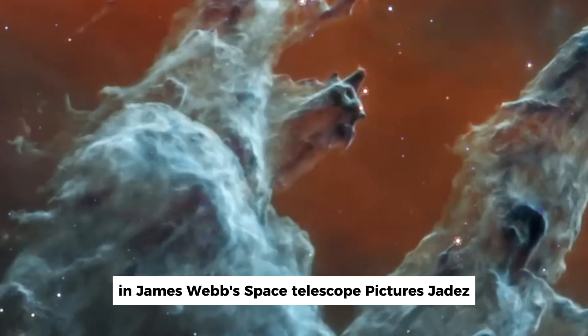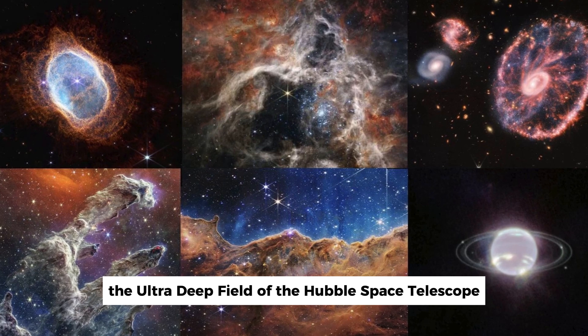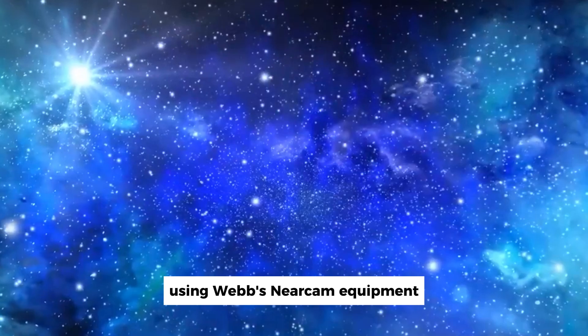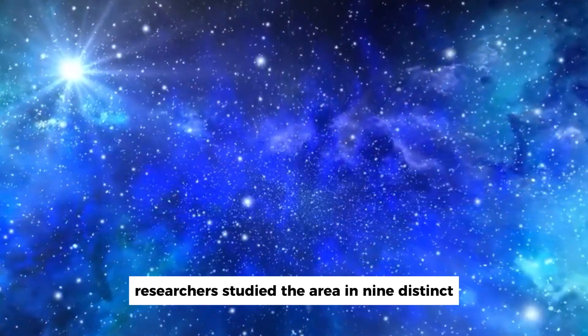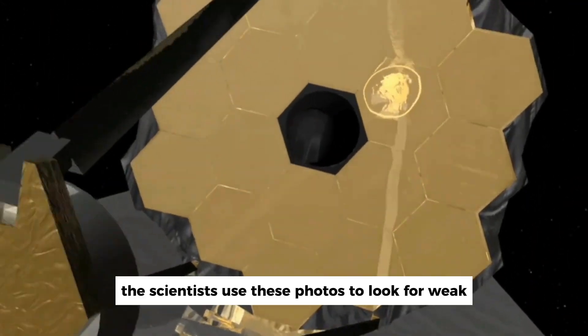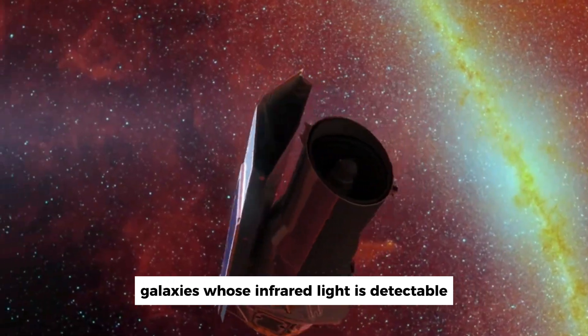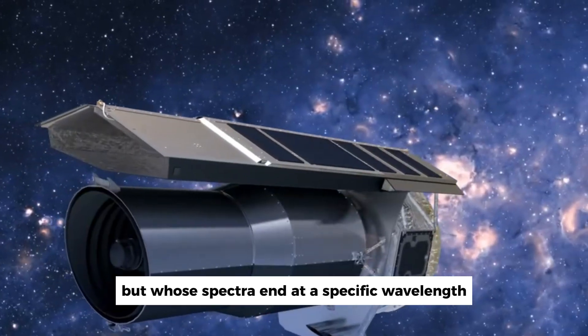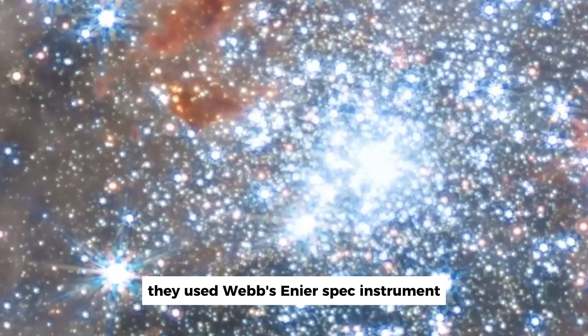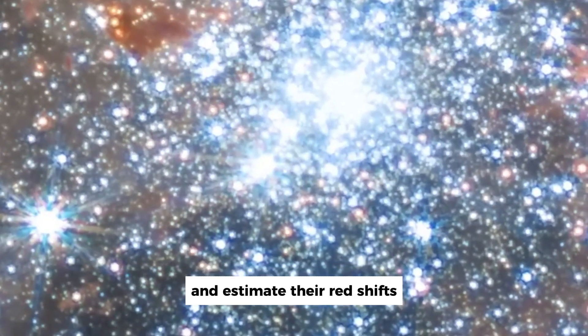In James Webb Space Telescope pictures, JADES, the ultra-deep field of the Hubble Space Telescope, is located here and to the north and east. Using Webb's NIRCAM equipment, researchers studied the area in nine distinct infrared wavelength bands. The scientists used these photos to look for faint galaxies whose infrared light is detectable but whose spectra end at a specific wavelength. They used Webb's NIRSpec instrument to reveal the characteristics of the gas and stars in these galaxies and estimate their redshifts.